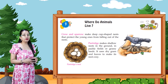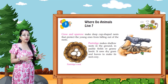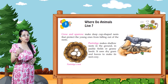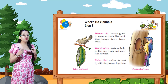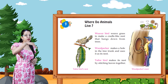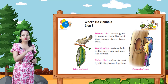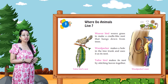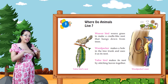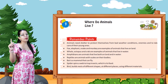Partridges make shallow nests in the ground in paddy fields or grassy lands, using dry grass and leaves to make their nest cozy. The weaver bird uses grass to make a cradle-like nest that hangs down from trees. The woodpecker makes a hole in a tree trunk and uses it as its nest. The tailor bird makes its nest by stitching leaves together.